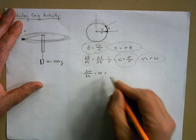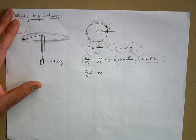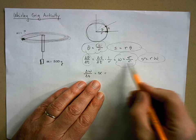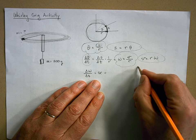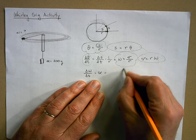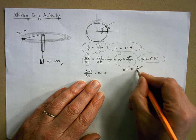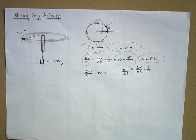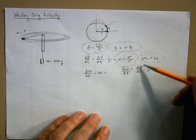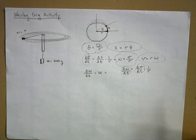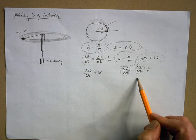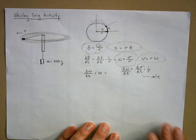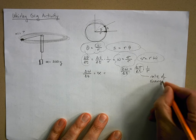We can also write: delta omega equals (delta v over delta t) times one over r. So alpha equals tangential acceleration over r. Here's where things get confusing: delta v over delta t is strictly the rate of change of speed — it does not include the change in direction of the velocity vector.